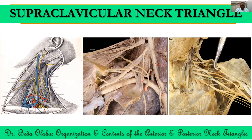In the supraclavicular triangle, bounded by the inferior belly of omohyoid, the middle third of the clavicle, and the posterior border of sternocleidomastoid, the contents include the subclavian artery — at least the third part of it — and the trunks of the brachial plexus. Those are the major contents of the supraclavicular triangle, also called the subclavian triangle. We may also have branches of the thyrocervical trunk as they traverse the triangle, including the suprascapular artery and the transverse cervical artery. The termination of the external jugular vein is also present within the subclavian triangle.